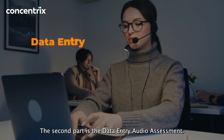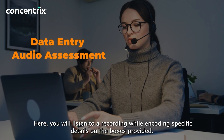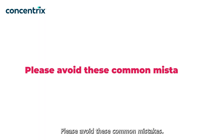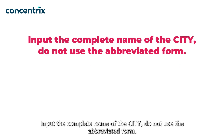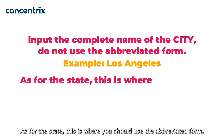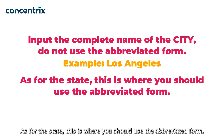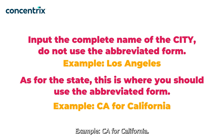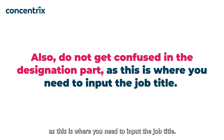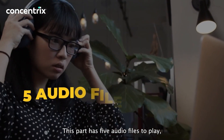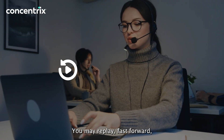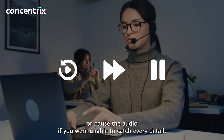The second part is the Data Entry Audio Assessment. Here, you will listen to a recording while encoding specific details in the boxes provided. Please avoid these common mistakes: input the complete name of the city — do not use the abbreviated form, for example, Los Angeles. As for the state, use the abbreviated form, for example, CA for California. Also, do not get confused in the designation part, as this is where you need to input the job title. This part has five audio files to play, and each number has different details. You may replay, fast-forward, or pause the audio if you are unable to catch every detail.